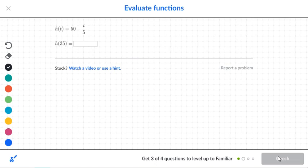Okay, next question. We got h of t is equal to 50 minus t over 5, which is a division. So we're going to go h of 35, this is equal to 50 minus 35 over 5.